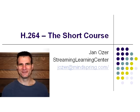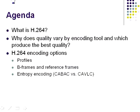Hi, I'm Jan Ozer. Over the next few minutes, I'll outline what you need to know to produce H.264 video files for Flash, QuickTime, and Silverlight. Here's our agenda: First, I'll define H.264. Then talk about why quality varies by encoding tool and identify the tools that produce the best results. Finally, I'll detail the most common H.264-related configuration parameters — profiles, B-frames, reference frames, and entropy encoding.